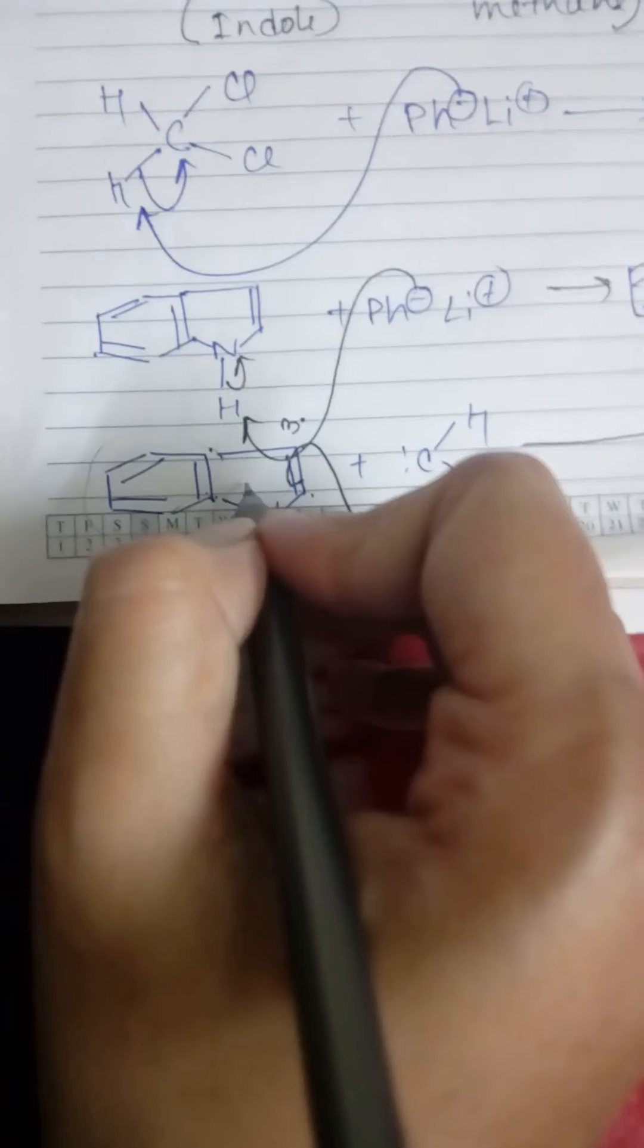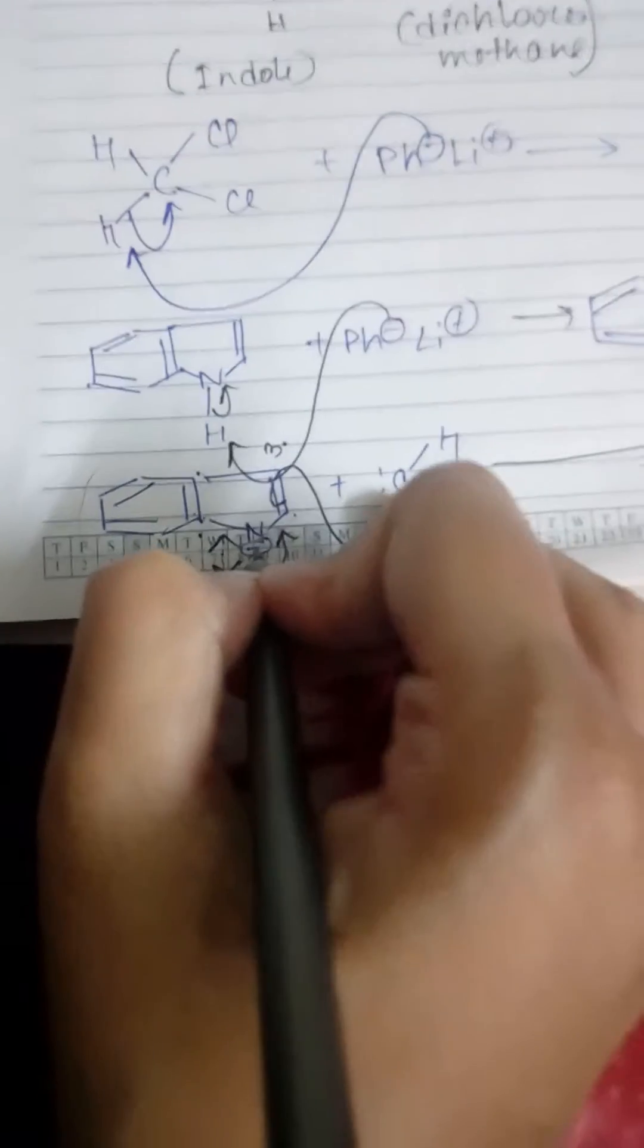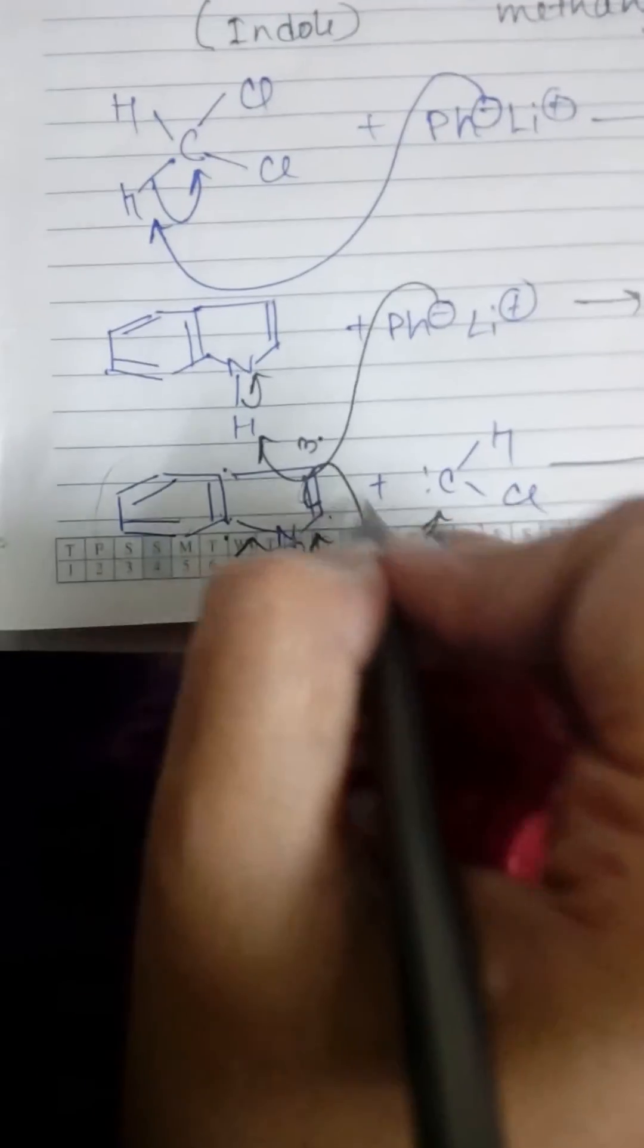Because if it goes to resonance on this side, then the aromaticity of this benzene nucleus will be lost and nature does not want this. So this negative charge goes to resonance this side and attacks through the three position and gives us a compound like this.